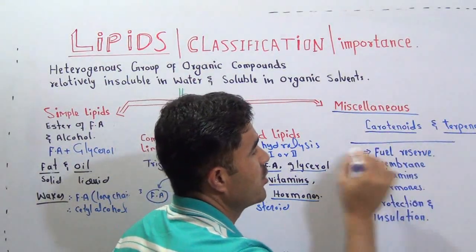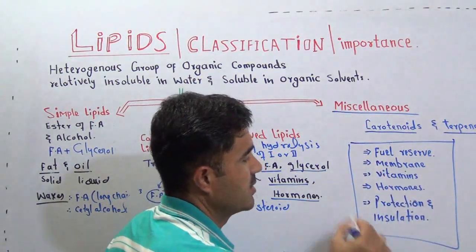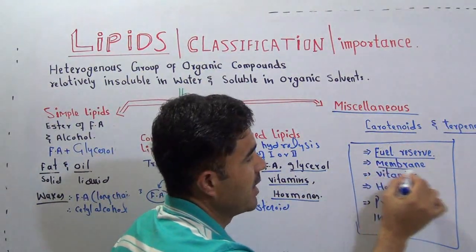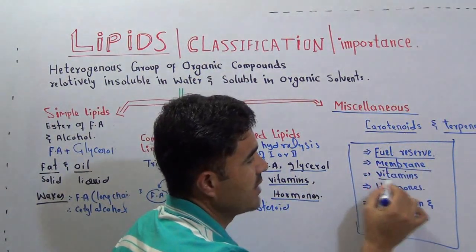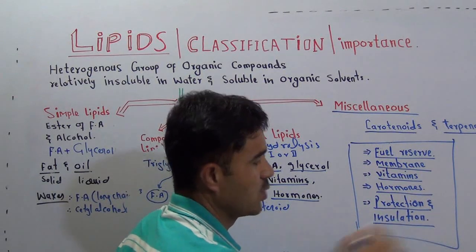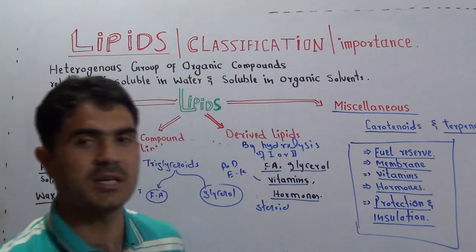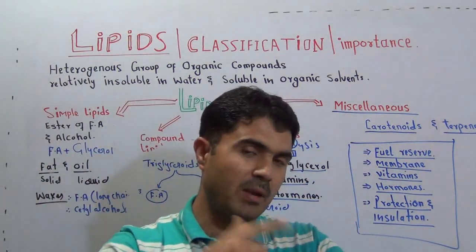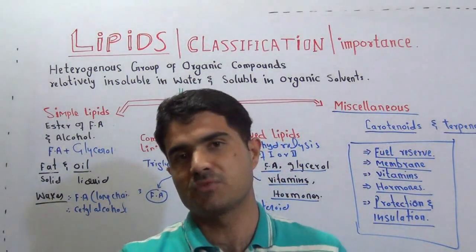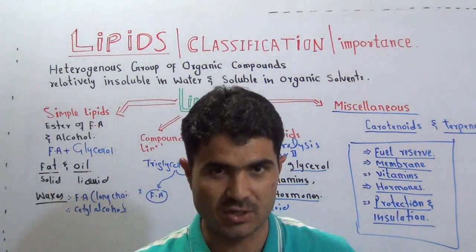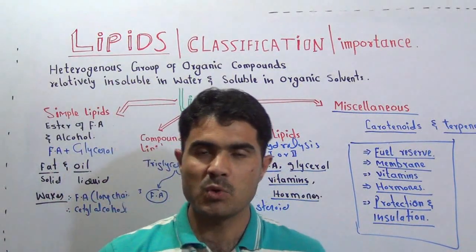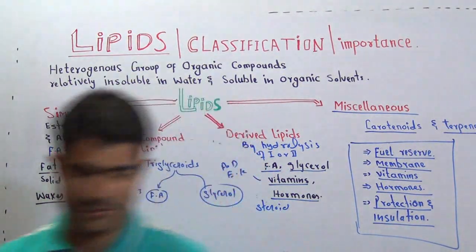Here is the importance of lipids: fuel reserve, membrane structure, vitamins, hormones, and protection and insulation. Insulation means around blood vessels there are lipids which protect our body from changes in temperature. I hope you got the lecture. Remember me in your prayers. Thank you. Take care. Allah Hafiz.